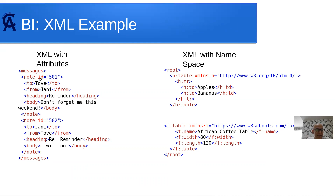Now there's another thing: attributes. I can add attributes to a tag. For example, the 'note' tag can have an attribute like an ID. When parsing, I can find a specific note — say, the one with ID 501 — and we'll talk about how this applies to XBRL. This is correct XML with attributes. I don't have to put attributes, and how many tags I have doesn't matter.